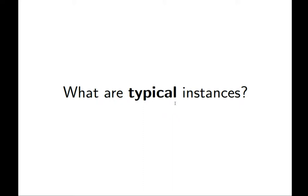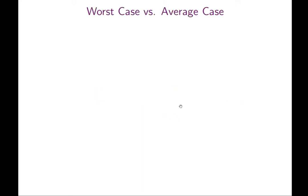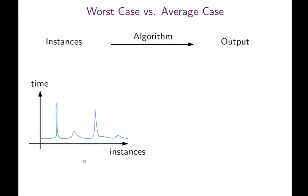In order to show you how to define it, let's review worst case and average case analysis. Recall what an algorithm is doing: you get instances, the algorithm does something, and then generates some output. Depending on the instance, the algorithm takes more or less time.